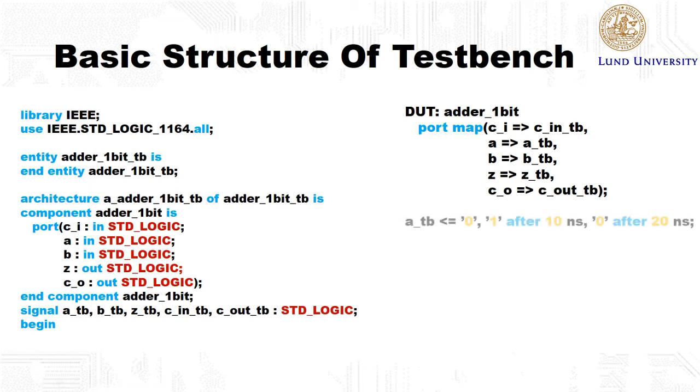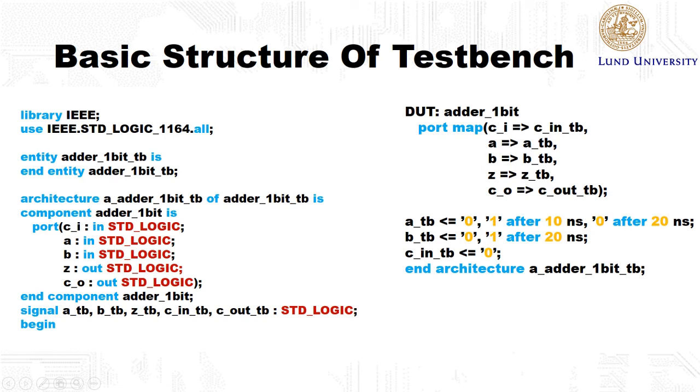Then we should specify what the input should be at different times. Here we define that a_tb should initially be assigned a zero, then after 10 nanoseconds it will become a one, and after 20 nanoseconds it will become a zero. Note that a_tb is connected to the input port a of the component that we would like to test. For the other two inputs b and c_i, we will also generate inputs in a similar fashion.